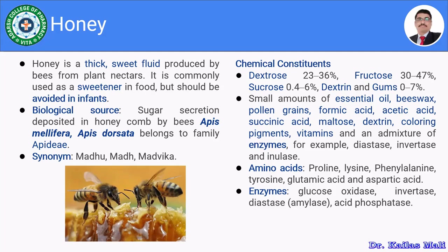The honey comprises approximately 23 to 36% dextrose, 30 to 47% fructose, 0.4 to 6% sucrose, along with dextrin and gums at 0 to 7%. It also comprises a small amount of essential oil, beeswax, pollen grains, formic acid, acetic acid, succinic acid, maltose, dextrin, coloring pigments, vitamins, and admixtures of enzymes.